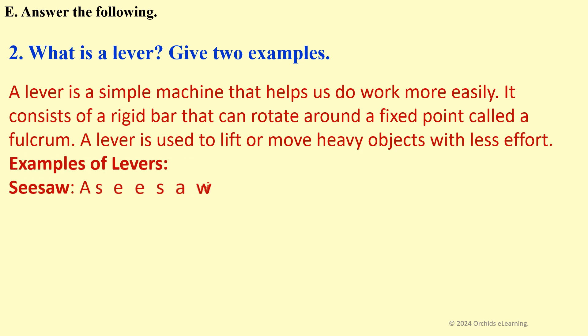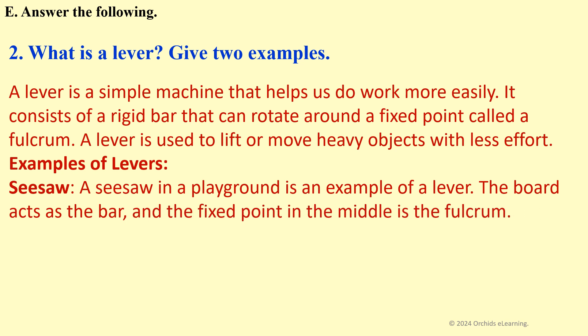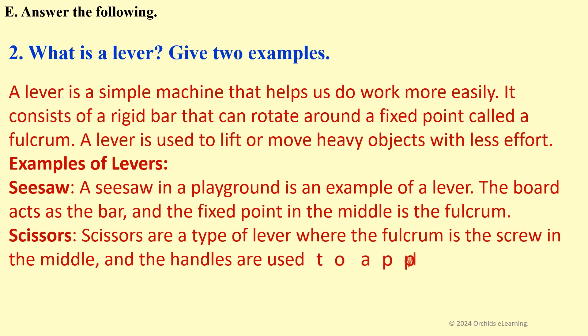Examples: Seesaw - A seesaw in a playground is an example of a lever. The board acts as the bar and the fixed point in the middle is the fulcrum. Scissors - Scissors are a type of lever where the fulcrum is the screw in the middle and the handles are used to apply force to cut objects.